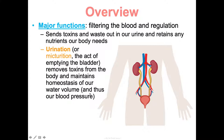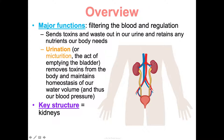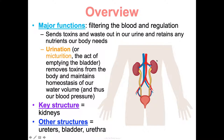Water volume has a big role in blood pressure, so when thinking about the urinary system, we're talking about the blood a ton too. The key structures of your urinary system are your kidneys, and other important structures are your ureters, your bladder, and your urethra.